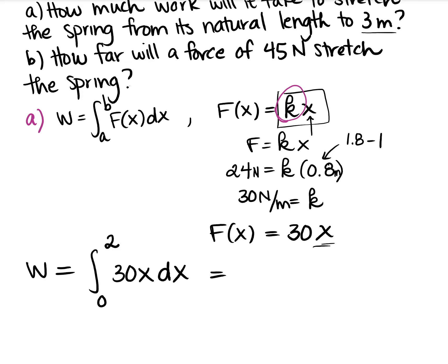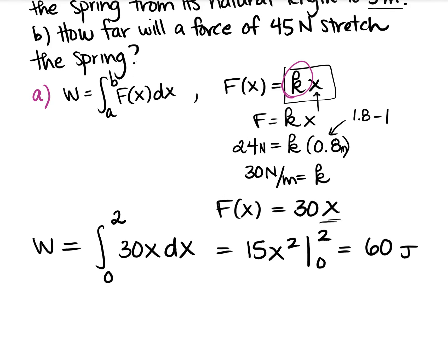You'll see that the actual calculus — the actual integration — is not that difficult. It's really just setting it up; that's the hardest part. Integrating 30x from 0 to 2 gives 60 joules, which is newton-meters. So that's part A, and that was pretty easy. The spring ones aren't that bad — they'll give you enough information to find the spring constant, and then you can use Hooke's Law to find your work.